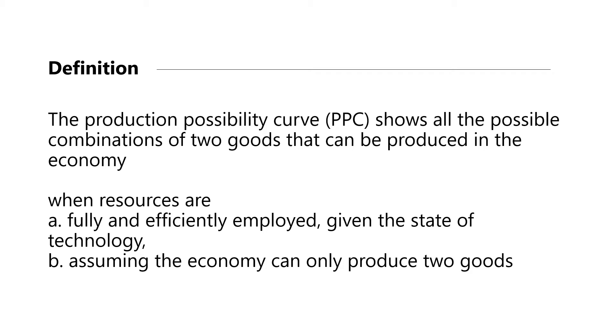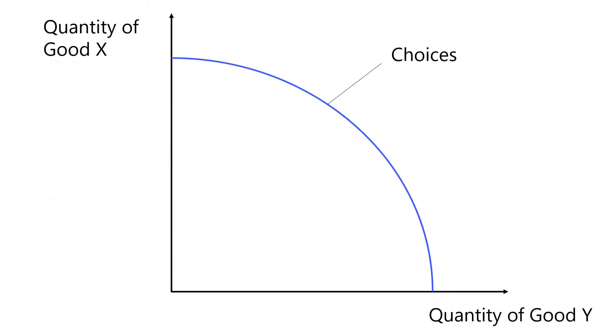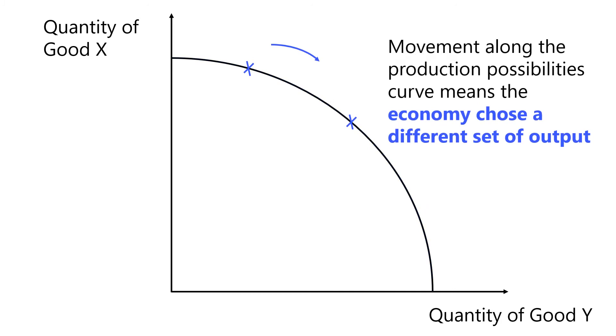From this definition, we can see that the Production Possibilities Curve can be used to examine choices in the production of two goods. Choice is shown by the points on the curve. The economy can choose to produce any combination to the curve depending on its objectives. A movement along the Production Possibilities Curve means that the economy has chosen a different set of output.